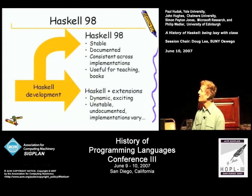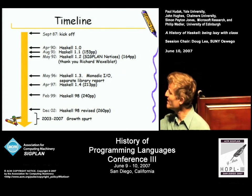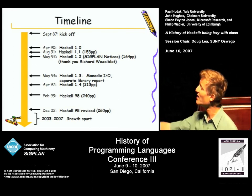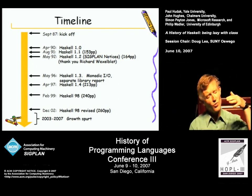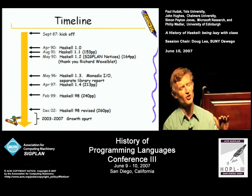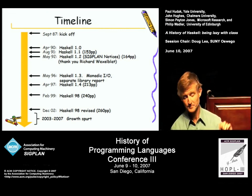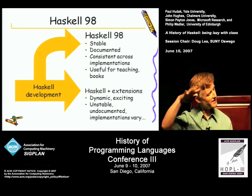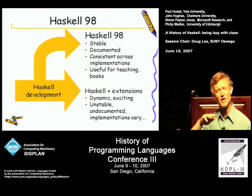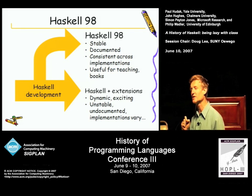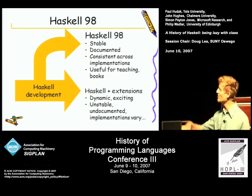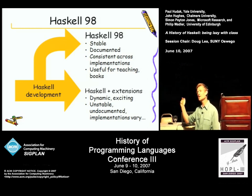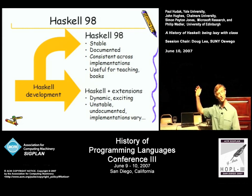Then follows a period of quite a lot of technical development, particularly about monadic IO, which I shall describe in a moment. And then later, around February 1999, we decided to fix a particular version of Haskell that we called Haskell 98 — because of the year '99, you see. It was aimed to be a stable point for people who wanted to write books, since at this stage Haskell was becoming useful enough that people might want to write books about it. So it would be useful for teaching, consistent across implementations, and all of that good stuff, while allowing Haskell itself to progress independently.